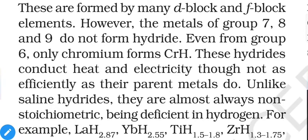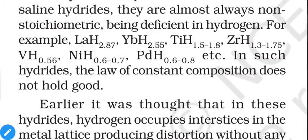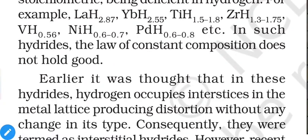These metallic hydrides are non-stoichiometric because when particles are randomly trapped inside metal voids there is no fixed ratio, giving random numbers. If permanent bonding occurred there would be a specific ratio, but with this randomness no specific ratio is obtained. For example, LaH₂.₈₇ means per one lanthanum there are 2.87 hydrogens — or per 100 La atoms there are 287 hydrogens. Similarly, per 100 Yb atoms there are 255 hydrogens.